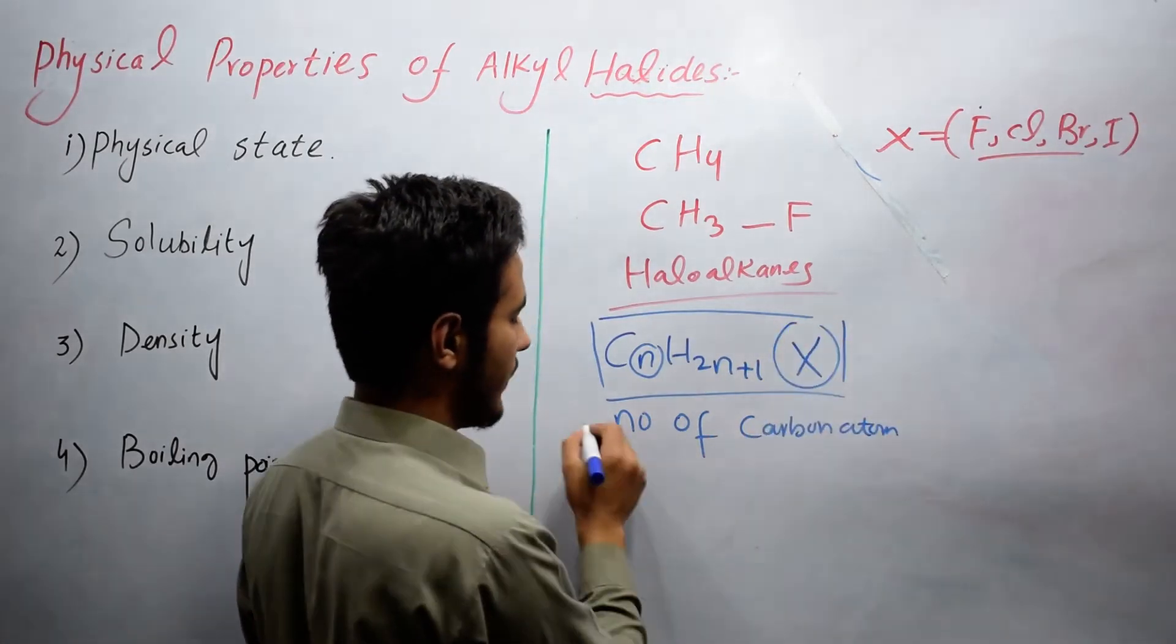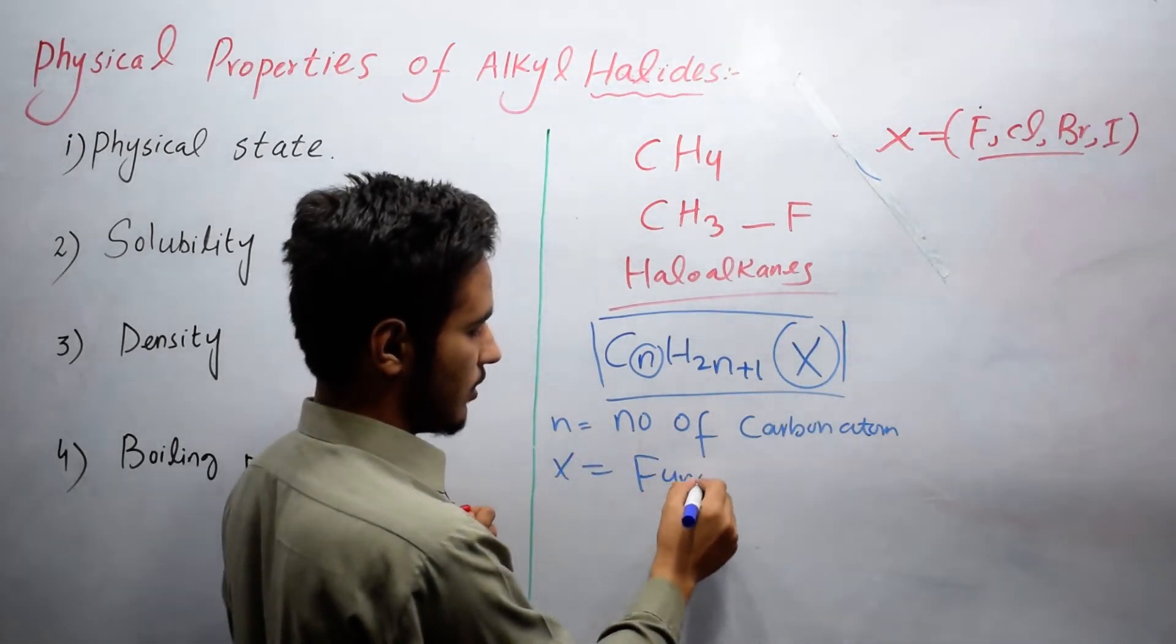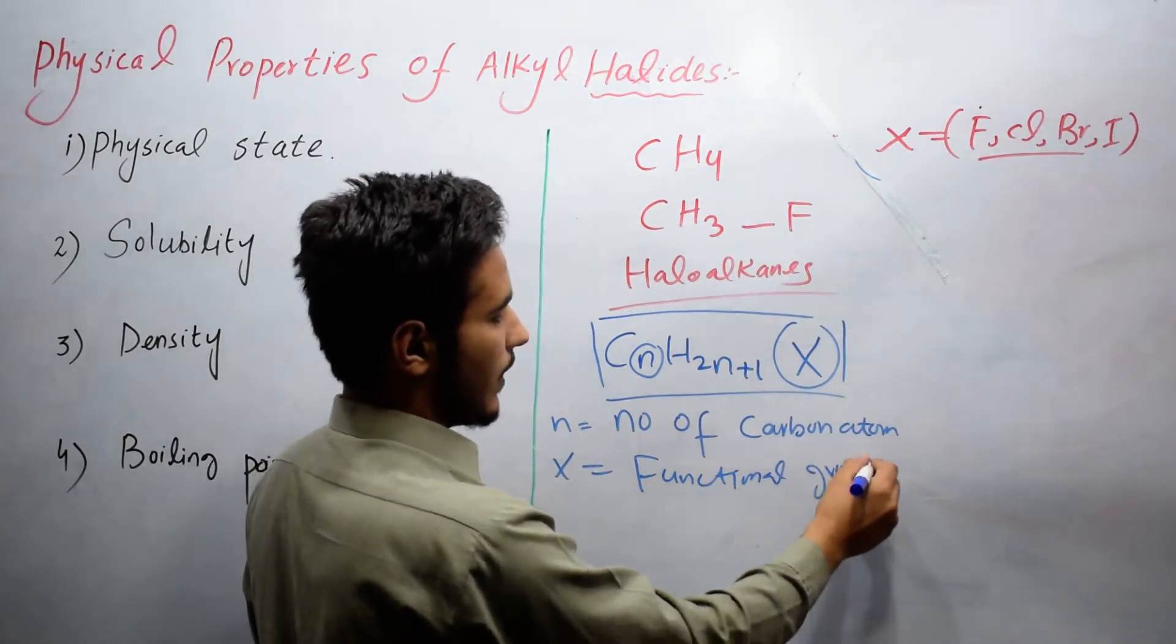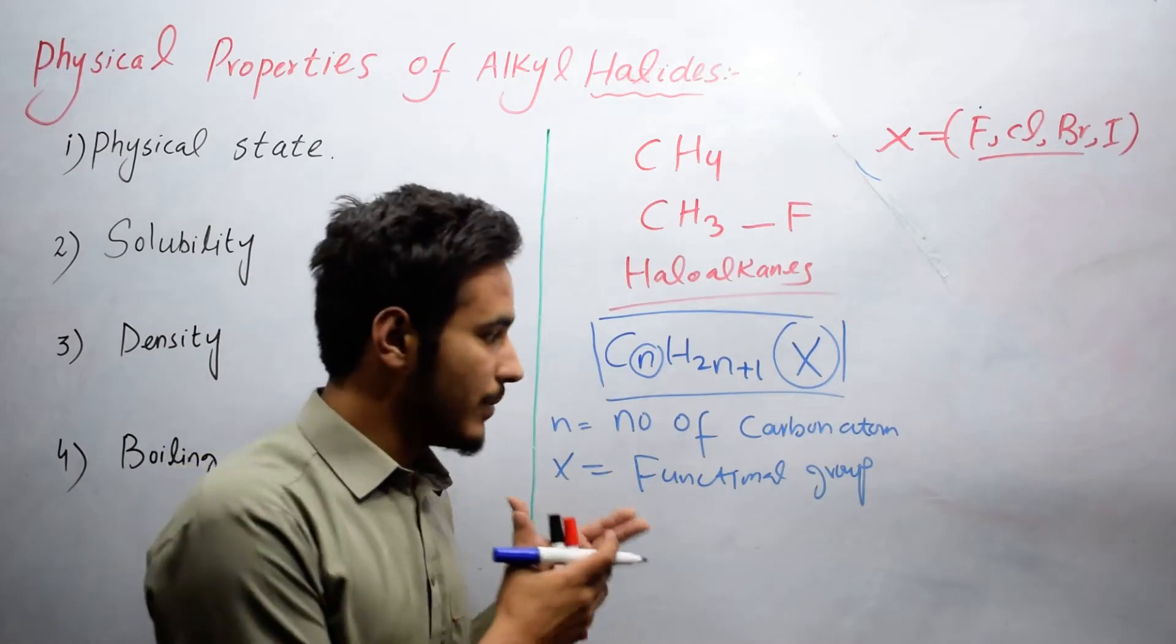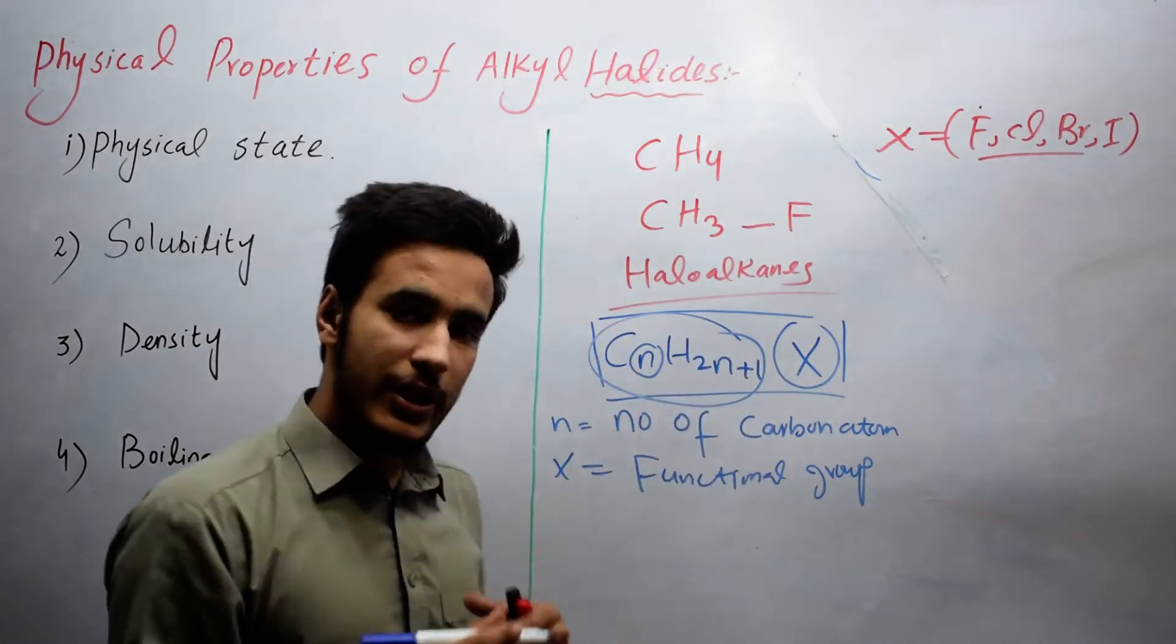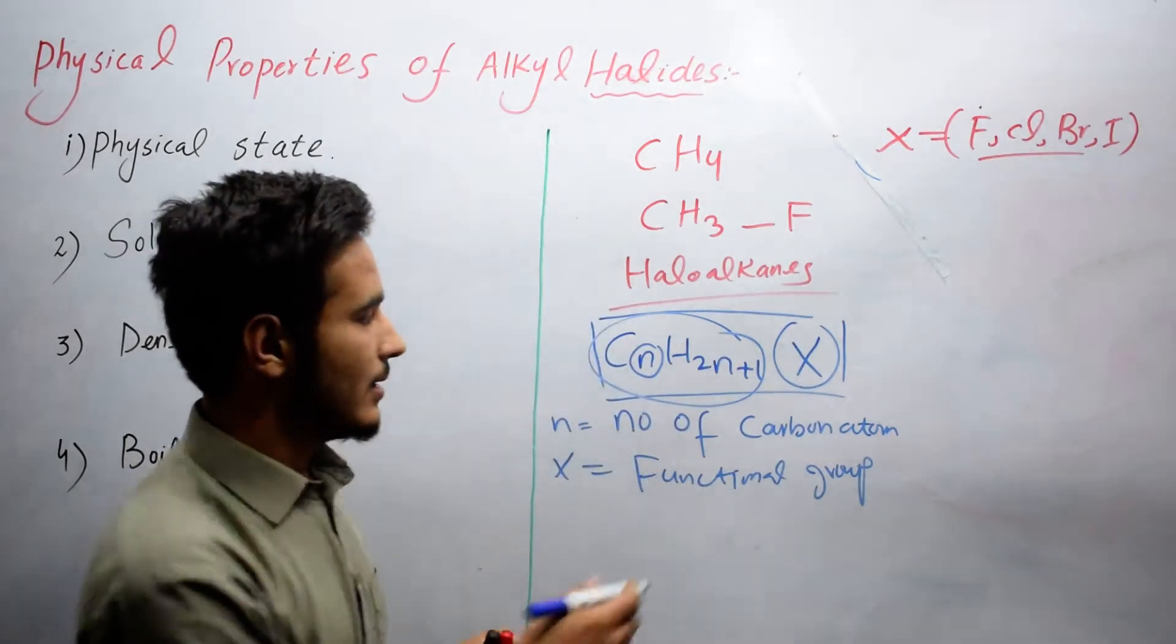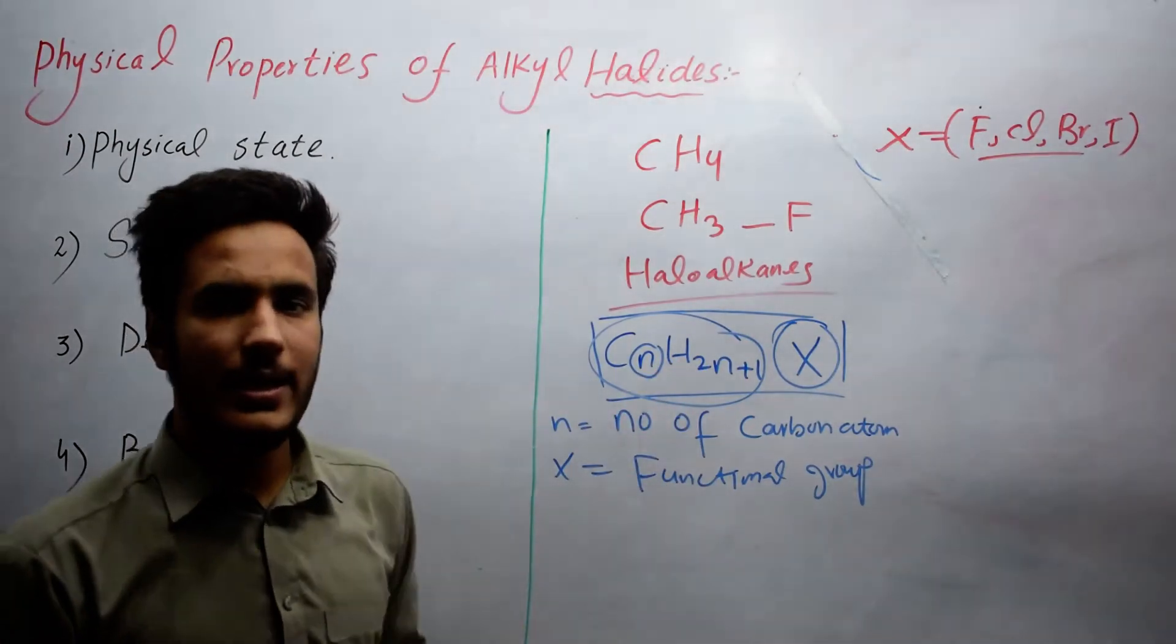While X is the functional group. Functional groups are atoms, bonds, or species which give properties to organic compounds and completely change their physical property. In this case of alkyl halides, halogen is the functional group.